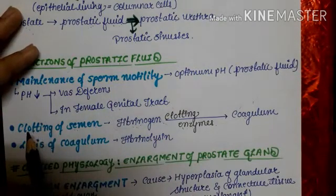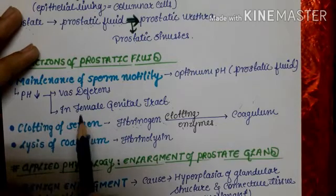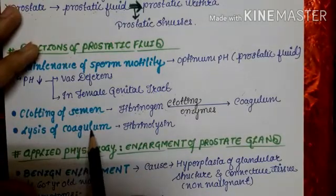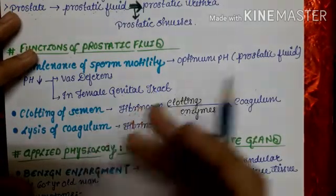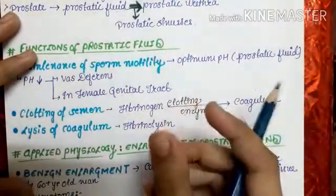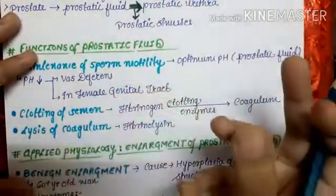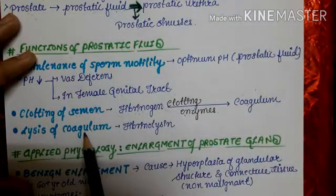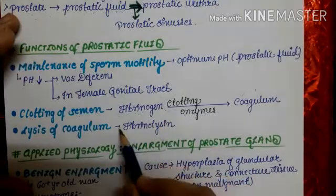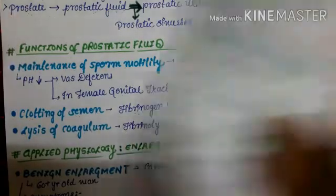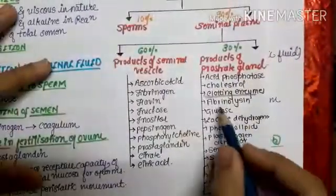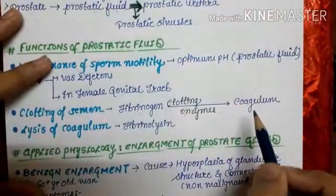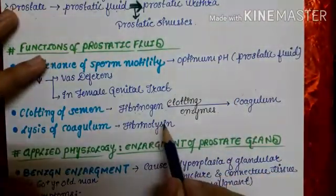The third function is lysis of the coagulum. Lysis of the coagulum is also necessary. If the semen remains clotted, the sperm is non-motile and fertilization is not possible. Fibrinolysin, which is a product of the prostatic fluid, liquifies the coagulum, and hence the sperm becomes motile.